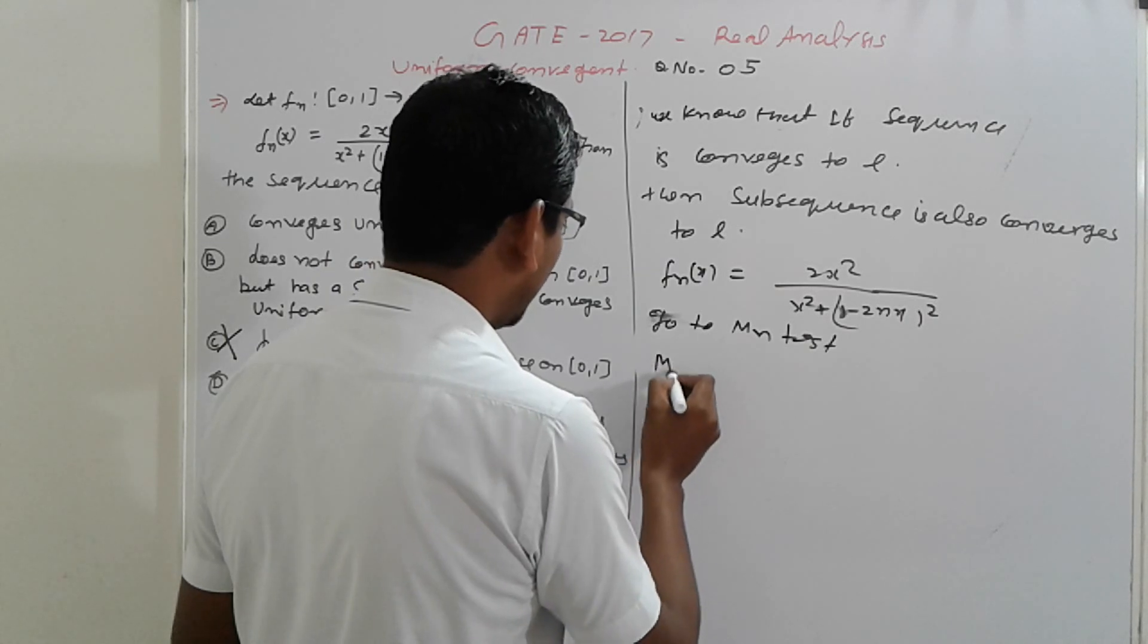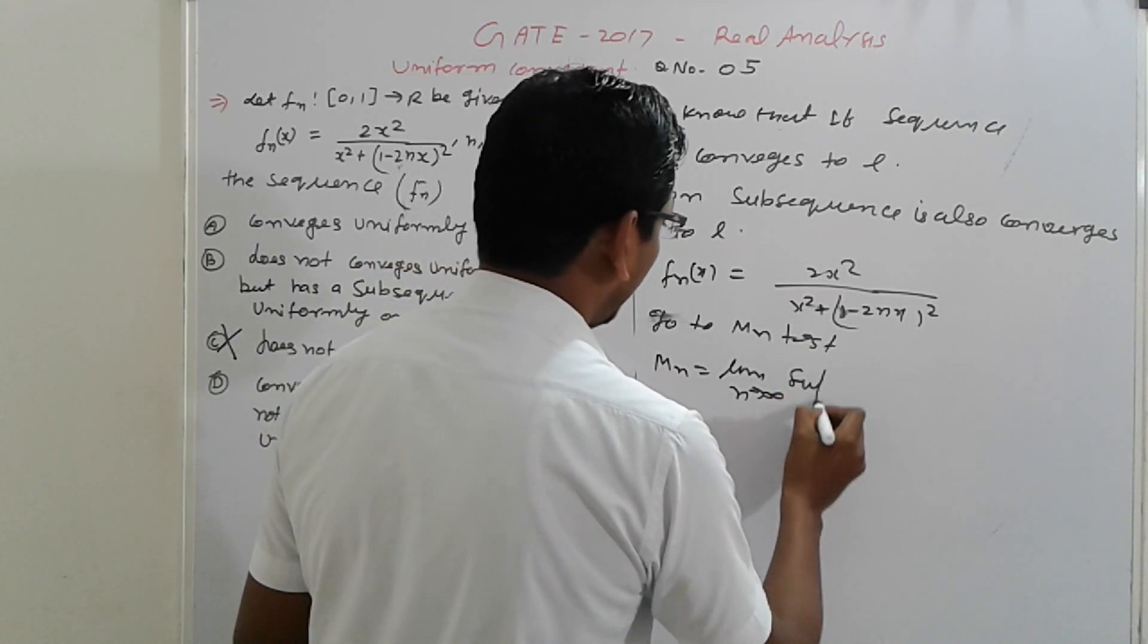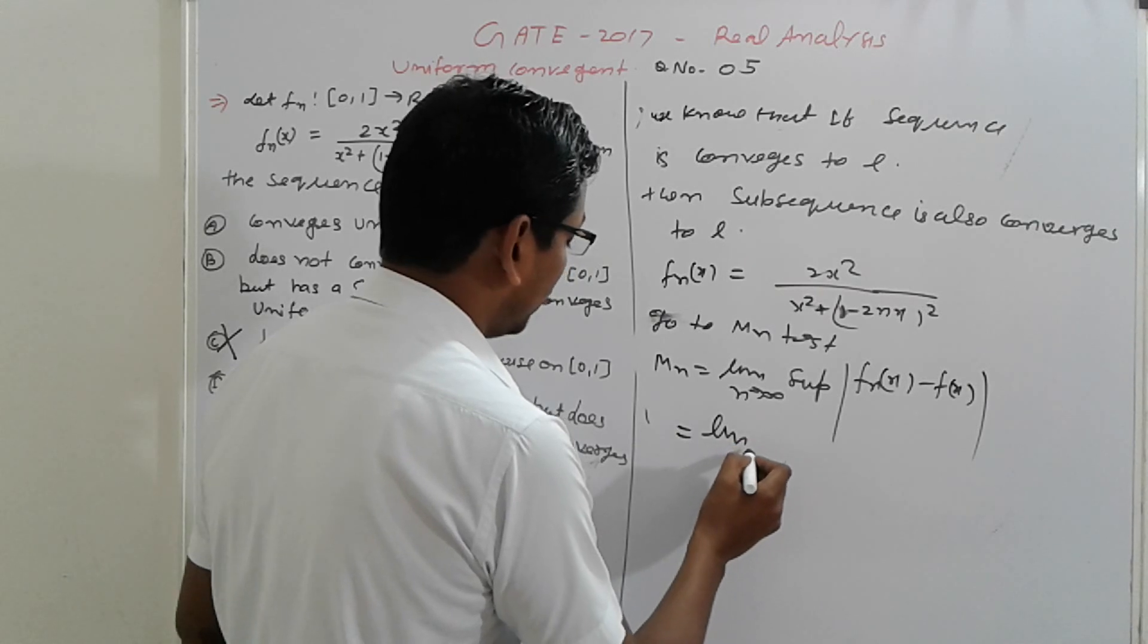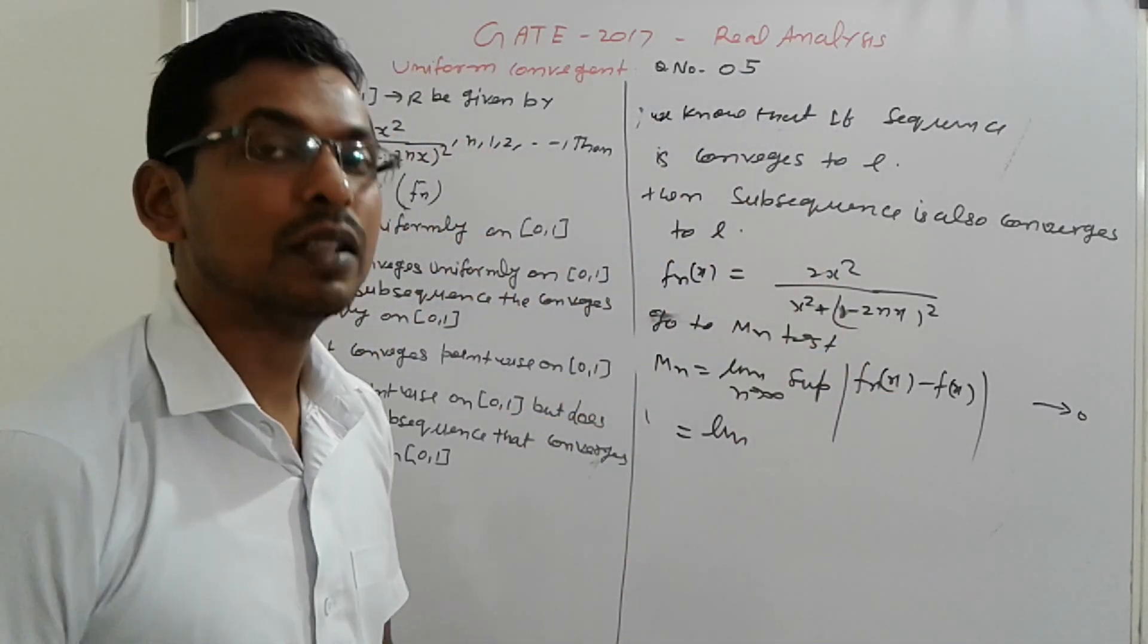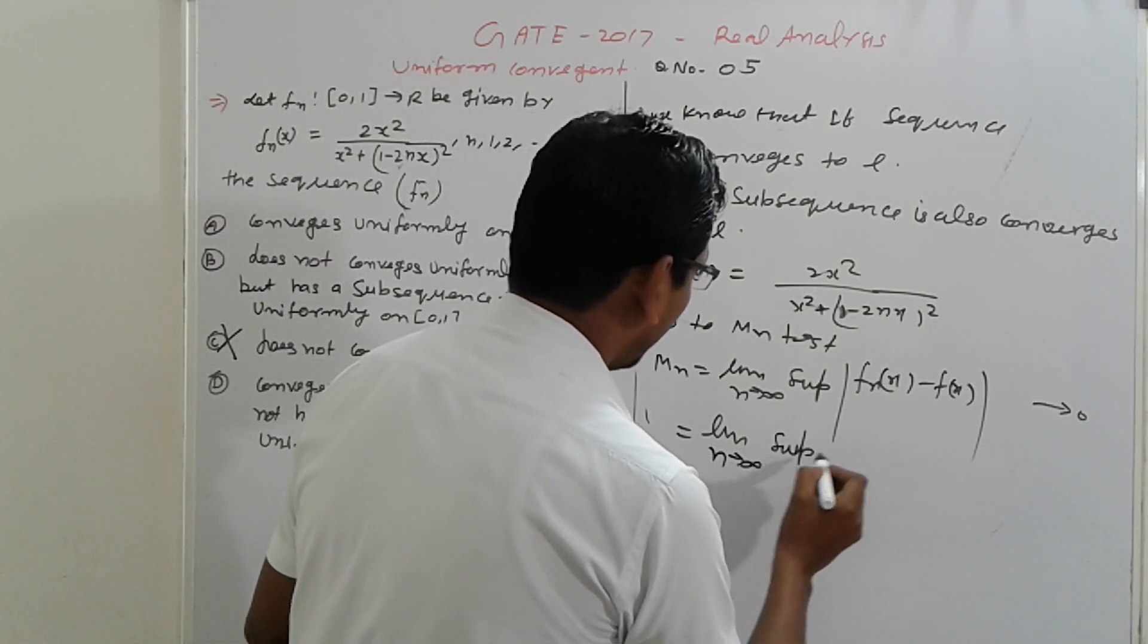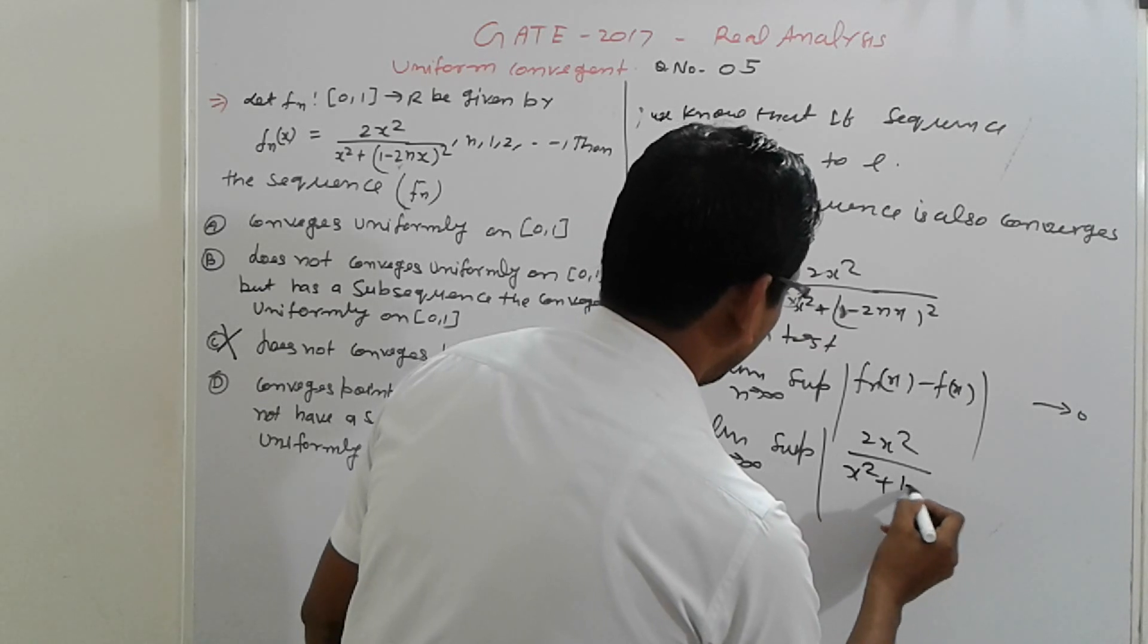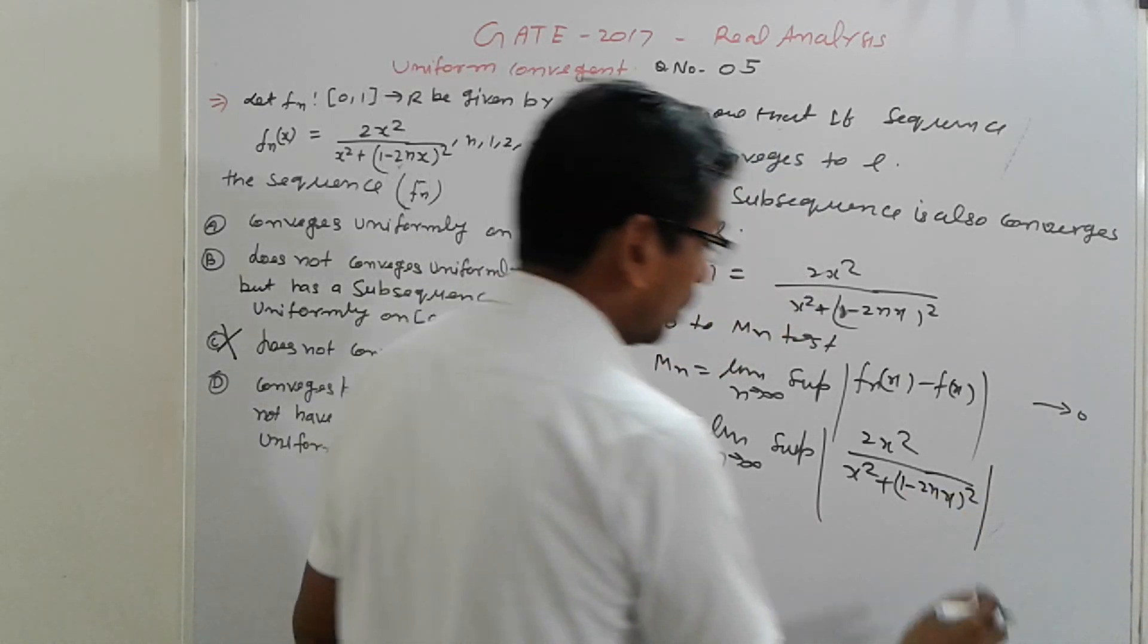So M_n is equal to limit n turning to infinity, supremum of |f_n(x) - f(x)|. So that is the formula, and if we go to tending to 0, then we can say that is convergent, otherwise not. So limit n turning to infinity, supremum of f_n(x): 2x² upon (x² + 1 - 2nx)² minus 0.